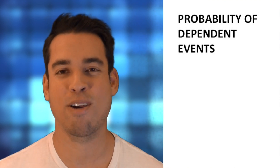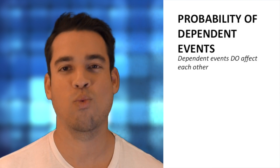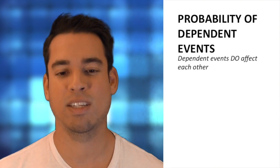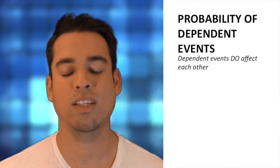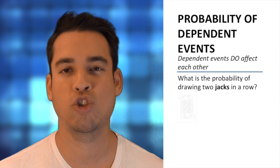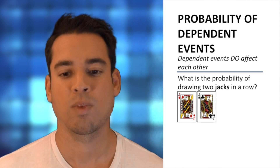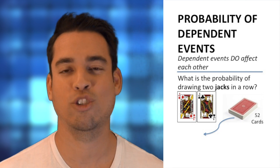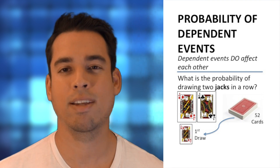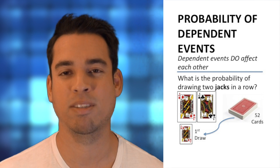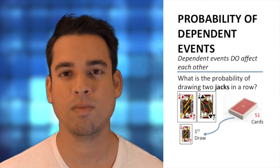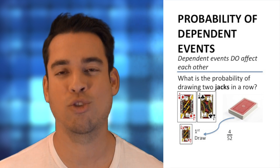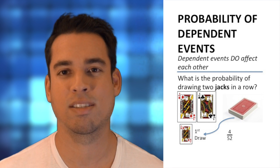Now let's talk about dependent events. Unlike independent events, dependent events actually affect each other — one event occurring will affect the probability of the subsequent event. For example: what is the probability of drawing two jacks in a row out of a single deck of 52 cards? For the first draw, there are four jacks in 52 cards, so the probability is four out of 52, or one out of 13.